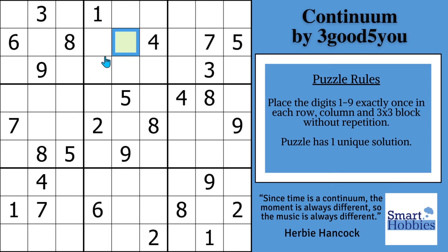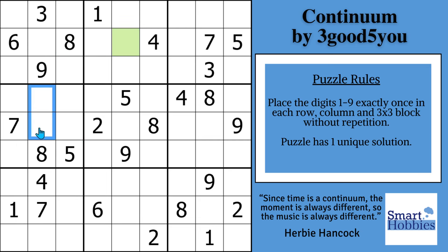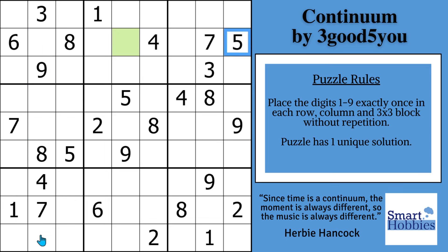The only cell that we can solve pretty easily here is in column 2. You see this 5 right here? There's no possibility for 5 in those cells, and you can't have a 5 here because of this 5. The only place left for a 5 in column 2 is right there.